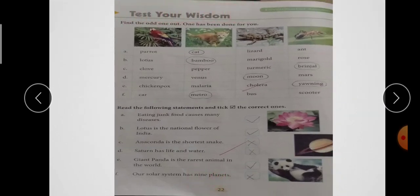Test your wisdom. First is, find the odd one out. One has been done for you. आपने जो अलग है, सबसे अलग उसको find out करना है. First की picture दी हुई है - Parrot, Cat, Lizard, Ant. तो इसमें सबसे अलग कौन सा है? Cat. क्यों? It is not laying egg.